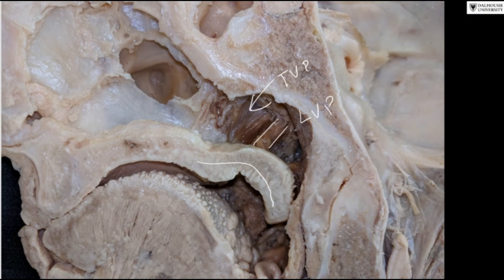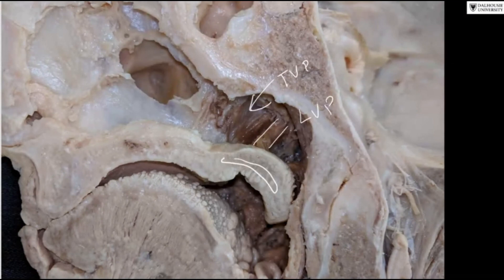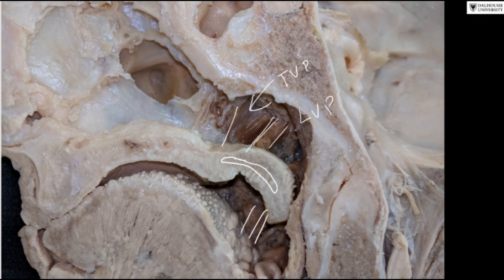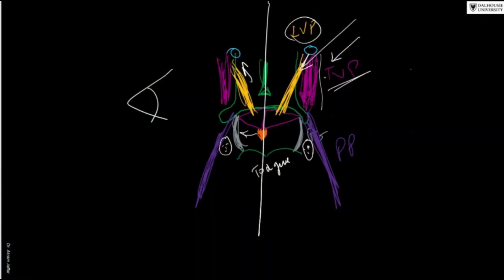The tensor veli palatini fibers, though not appearing directly related to the palate here, change their direction and form the aponeurosis of the soft palate. This aponeurosis serves as the tendon of the muscle and is then covered by mucous membrane. It contains salivary glands, and other muscles including the musculus uvulae are connected to it from below — that is why it is thick. The aponeurosis constitutes the skeleton of the soft palate.